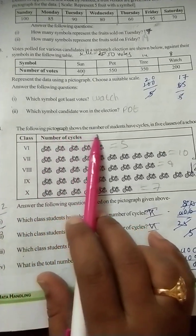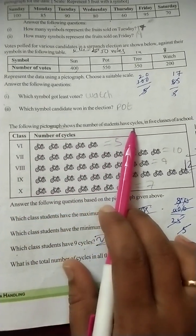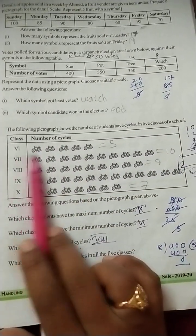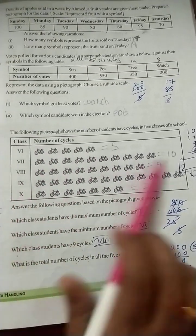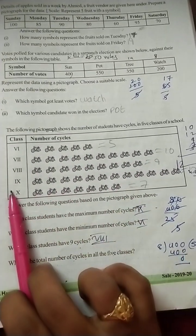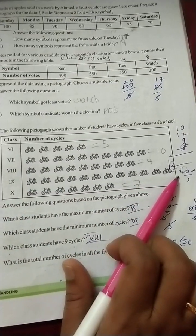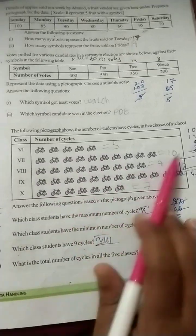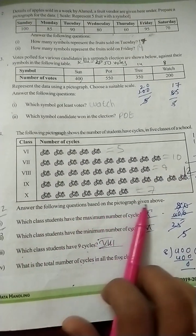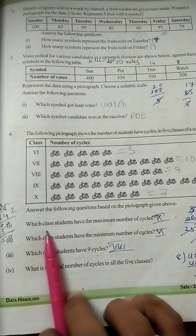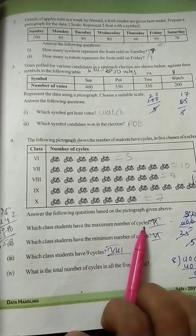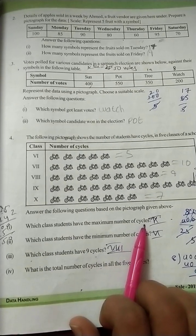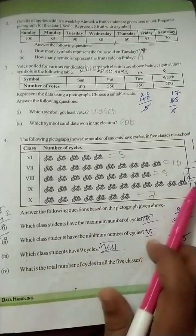Fourth question. The following pictograph shows the number of students have cycles in 5 classes of a school. Sixth class, five cycles. Seventh, ten. Eighth, nine. Ninth class, twelve. Tenth class, seven. Just I counted and I wrote the numbers here. Now answer the following questions based on the pictograph given in book. Which class students have the maximum number of cycles?